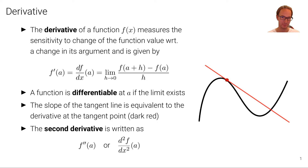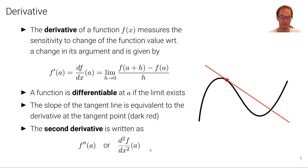Similarly, we can also write down higher-order derivatives. We can take the derivative of a function and compute the derivative of the derivative, and so on. For example, the second derivative is written as f double-prime of a, or d squared f with respect to dx squared evaluated at a — just two different expressions denoting the second derivative of function f evaluated at a.